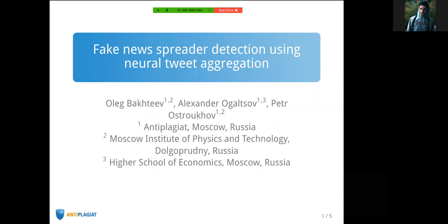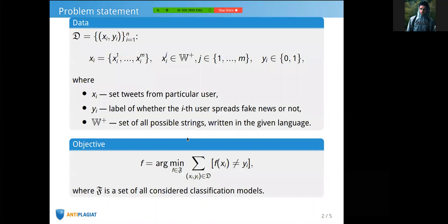Let's start with the problem statement. Here we have a classification problem. Our dataset is a set of object-label pairs. In this task, the object is a set of tweets written by a particular user, and the label is whether the user spreads fake news or not. The objective is just accuracy.